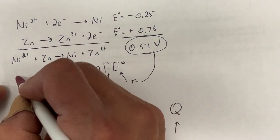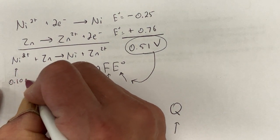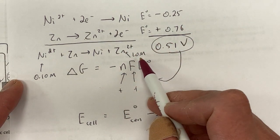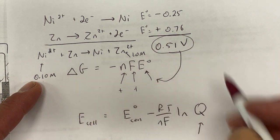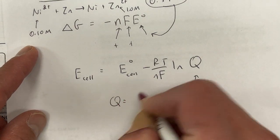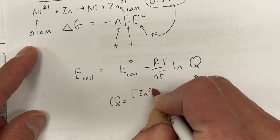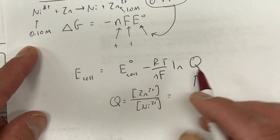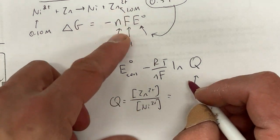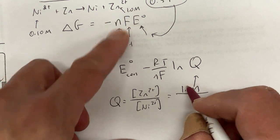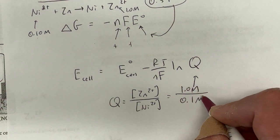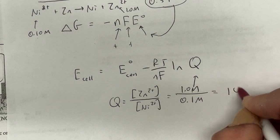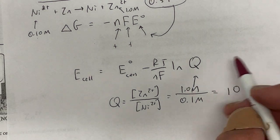Let's take a look and see what Q is. So Q is the reaction quotient. That is products over reactants: Zn²⁺ concentration over Ni²⁺ concentration. So if I do that, that's going to be 1 molar divided by 0.1 molar, and that will be 10. So that's going to be 10. Q is 10.